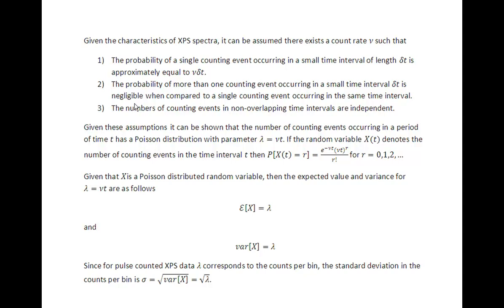If we look at these three conditions of what we expect for XPS data, and if these three conditions are satisfied, then statistics tells us that the uncertainty in the counts per bin will be the square root of the counts per bin.